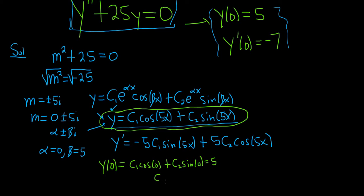Cosine of 0 is 1, sine of 0 is 0. So we simply get c₁ equals 5.